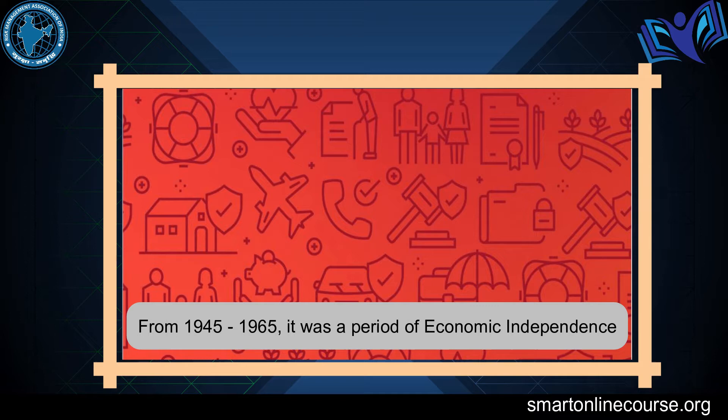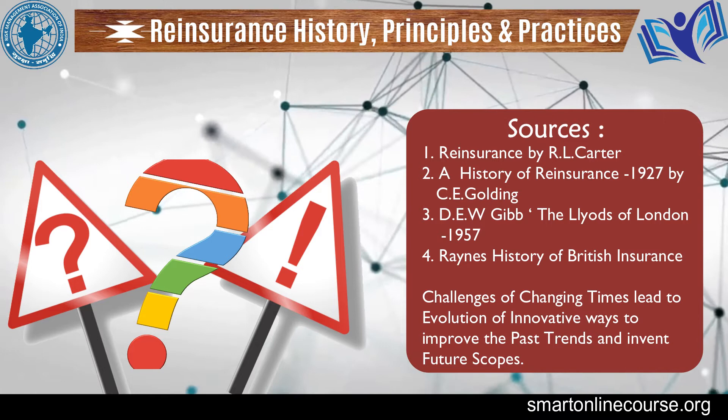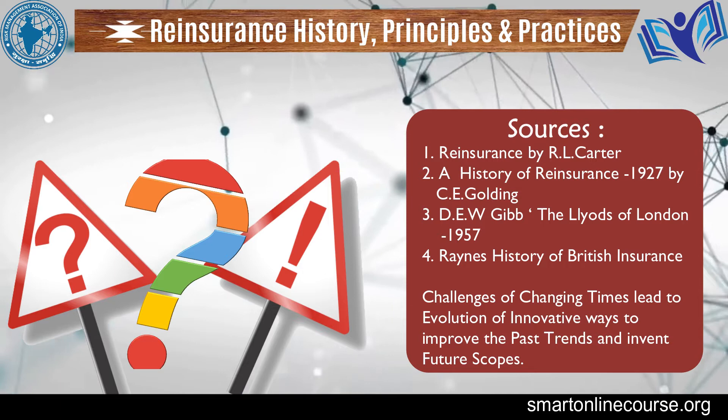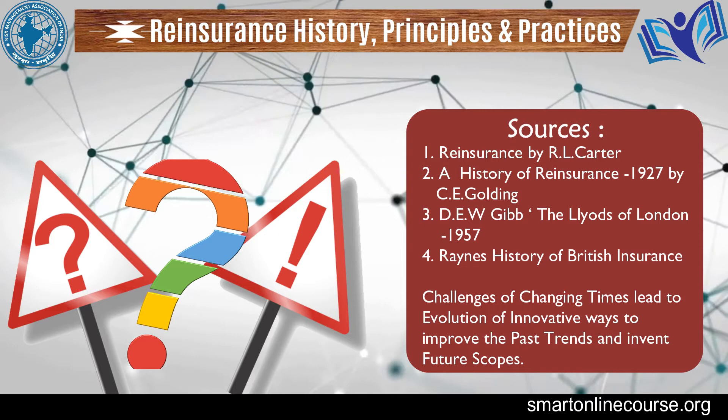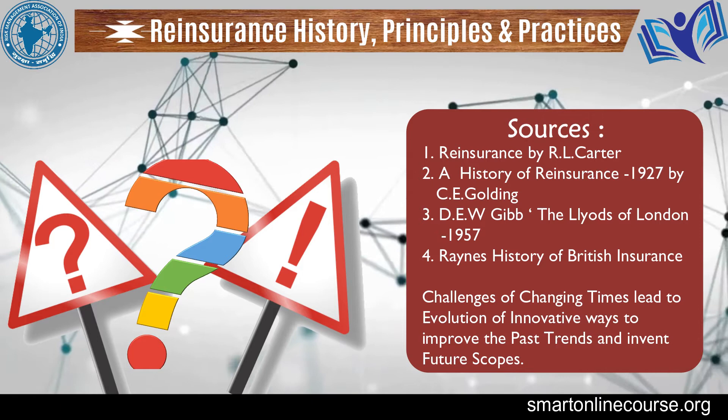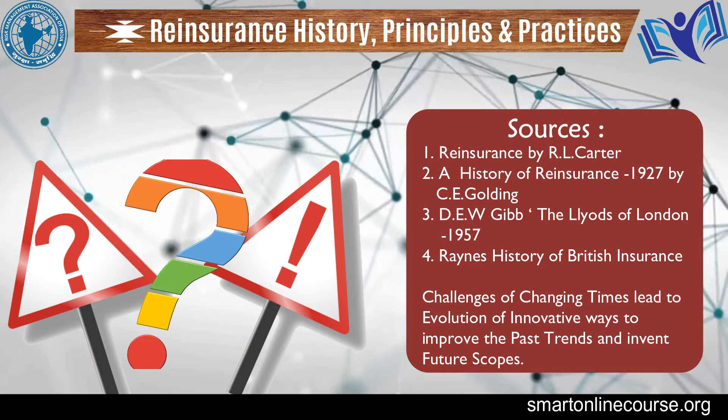The sources are: History of Reinsurance by C.E. Golding in 1927; Lloyd's of London by D.E.W. Gibb in 1957; History of British Insurance by Rennes; Reinsurance by Professor R.L. Carter; Sigma Reports of Swiss Re; and Publications by Benicry on landmarks in the history of reinsurance.